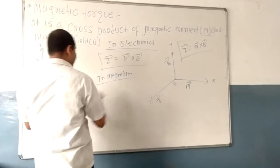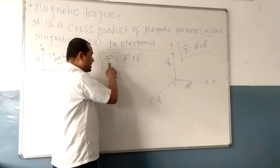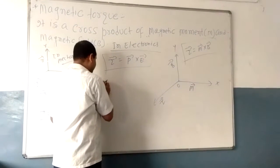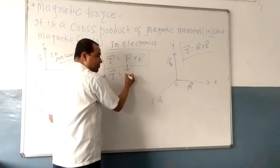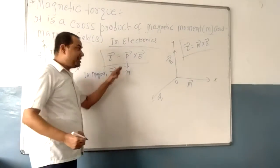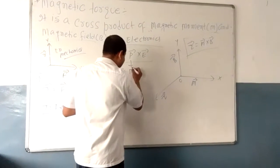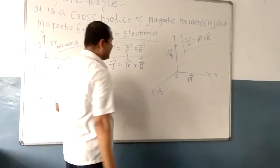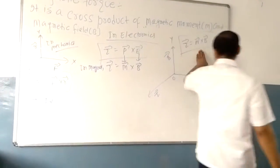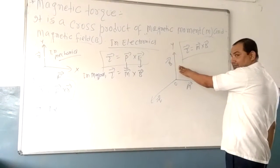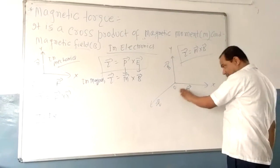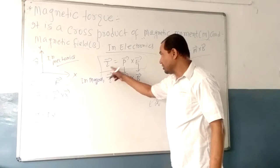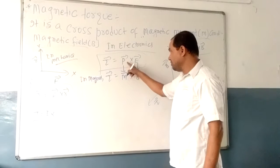In electrostatics, electric torque is equal to electric dipole moment cross electric field. In magnetism, in place of electric dipole moment it will be magnetic dipole moment M, and in place of electric field it will be magnetic field vector B. If a magnetic moment is acting under the magnetic field, then it experiences a magnetic torque, where magnetic torque is the cross product of M and B — similar to the electric torque.